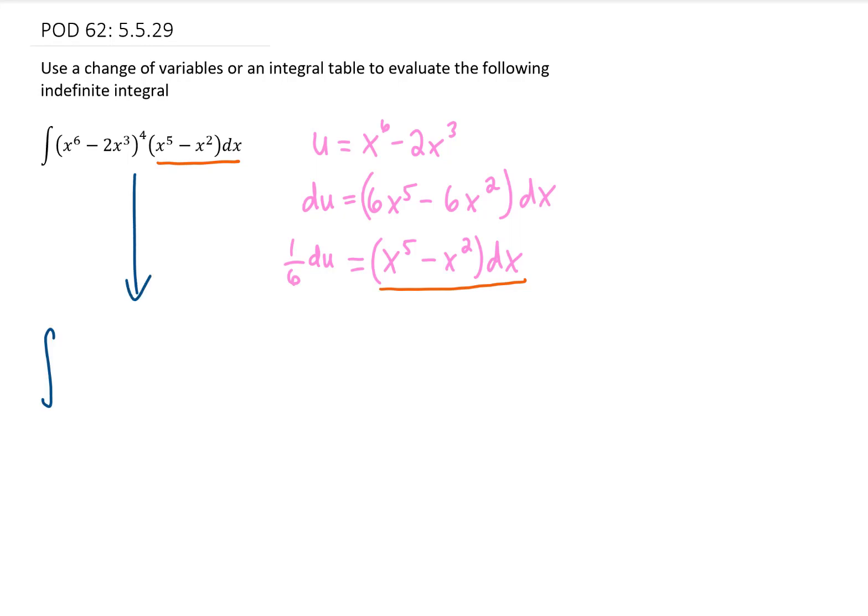So now rewriting our integral, this first piece here was just our u that we chose to the fourth power. And this second piece we already mentioned is going to be a one-sixth du. We can take that one-sixth outside of the integral.